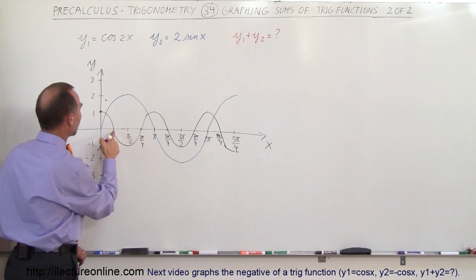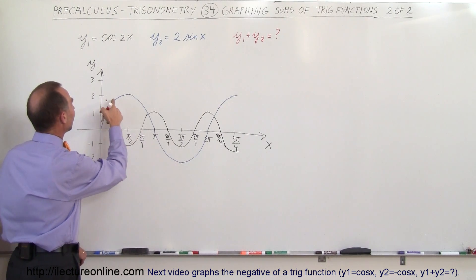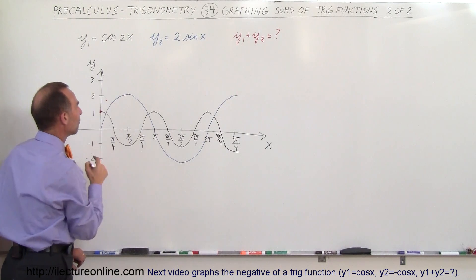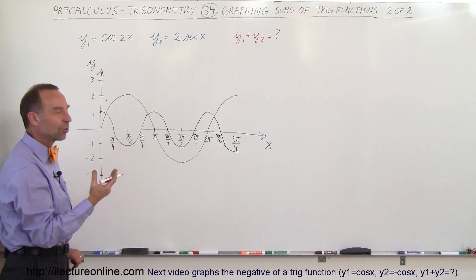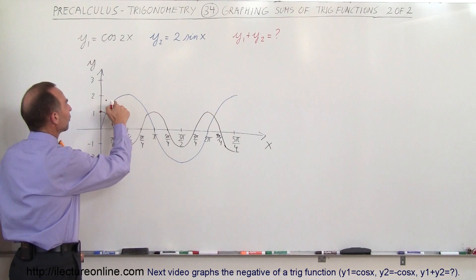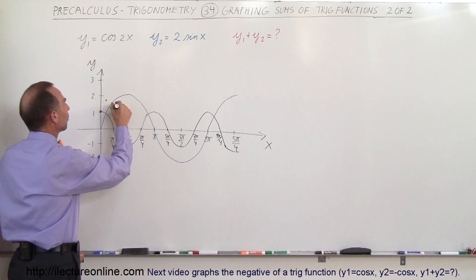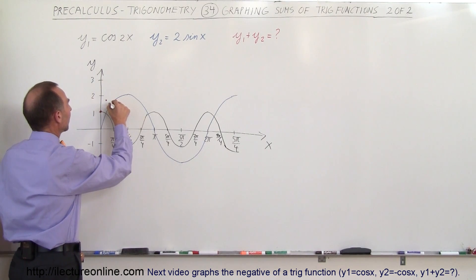Notice where at pi over 4, the cosine function is 0, and the sine function is halfway to its maximum value. That would be like at 45 degrees, which would be the 0.707 times 2, which is 1.4, so we'd be down just a little bit, right there.